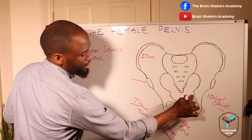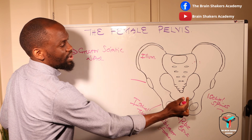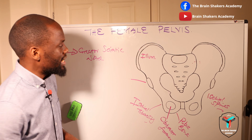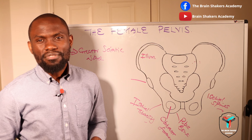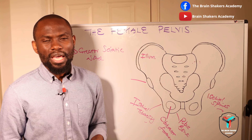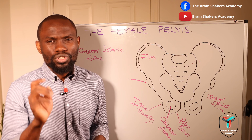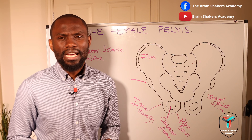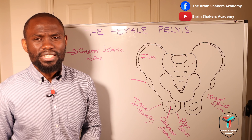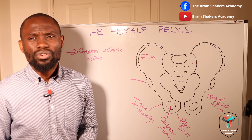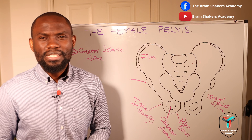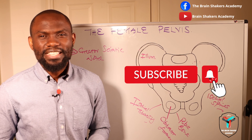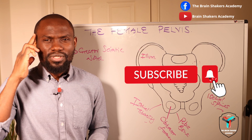On the bottom part, just below the ischial spines, you have the lesser sciatic notch. Those are some of the structures that form the female pelvis — a brief overview of what you would find when you look at a female pelvis. There are quite a number of types of female pelves, and we'll look at those in a separate video, including differences in their pelvic brim, their inlet, and their cavities. If you found this video interesting and helpful, please drop comments, give a thumbs up, share this video, and subscribe to the YouTube channel, the Brain Shakers Academy. Thank you so much for watching and I will see you in the next one.